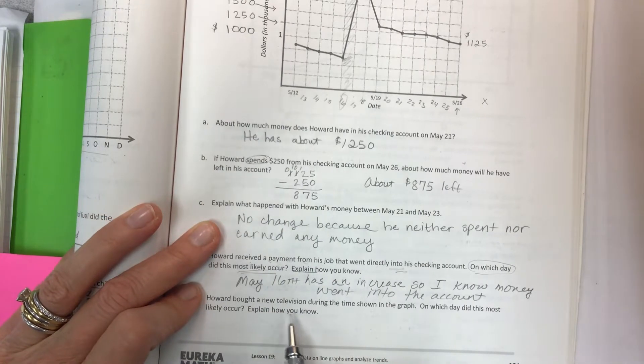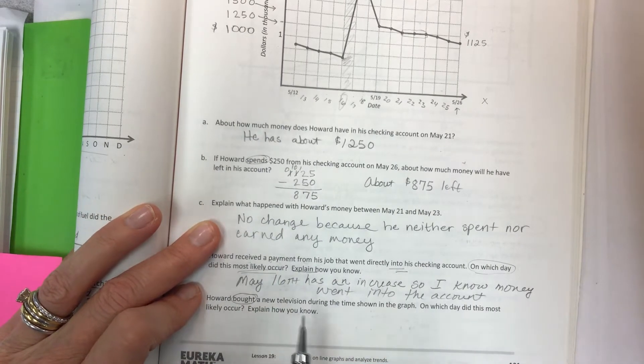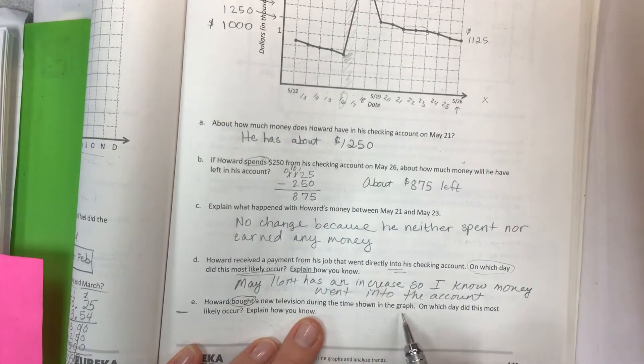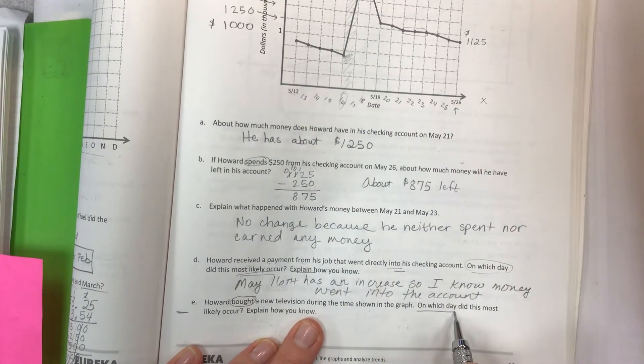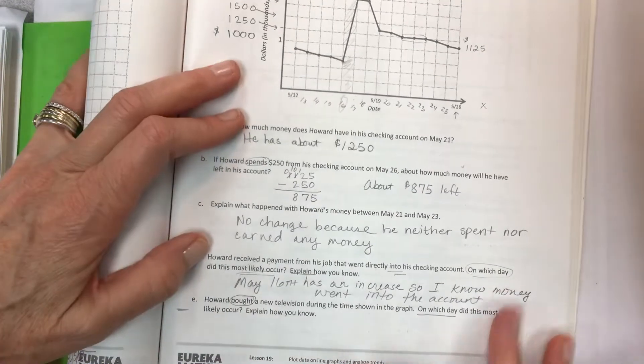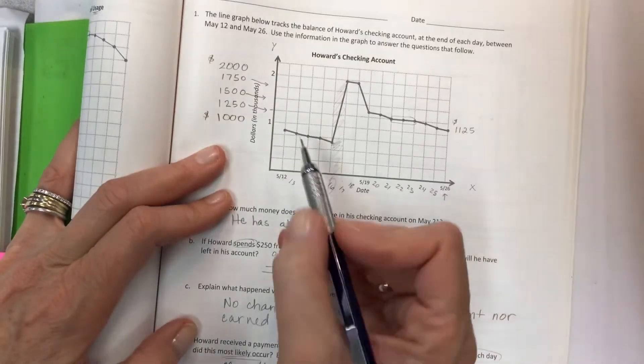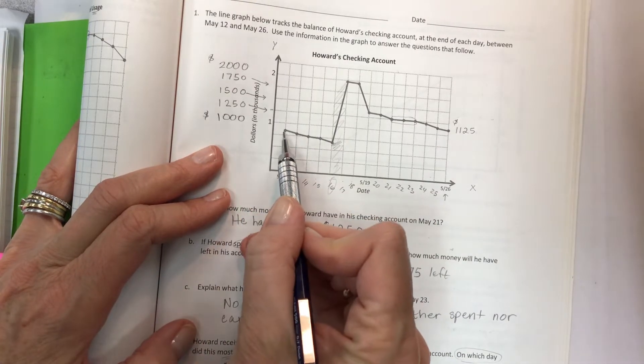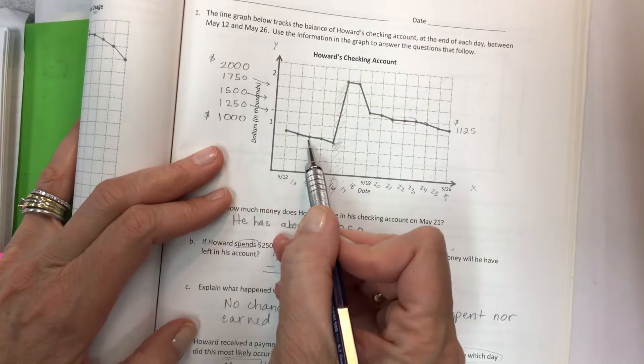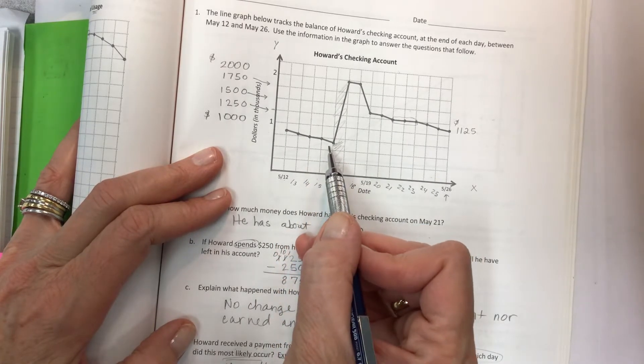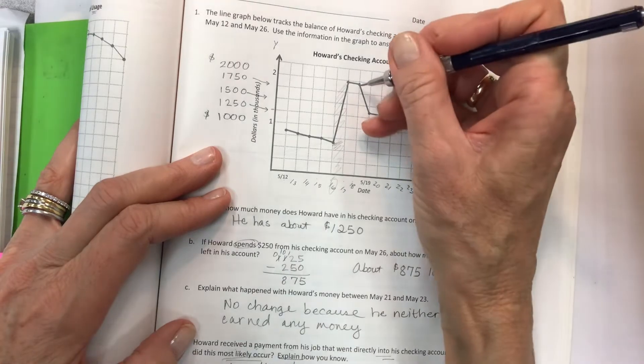Finally here, Howard bought a new television. He bought, that means he's spending it. It's subtraction during the time shown in the graph. On which day did this most likely occur? Explain how you know. If there's a little spending, this might be going to the grocery store, going to Target, pick up a few things, buying somebody's birthday present. But when you have a huge drop, that's a big expense.